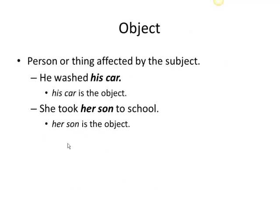Often what we have to complete a thought is you need an object. The object is the person or thing affected by the subject. So, 'he washed his car' — what did he wash? His car. That's the object. Or 'she took her son to school' — who did she take to school? She took her son. That is also the object.